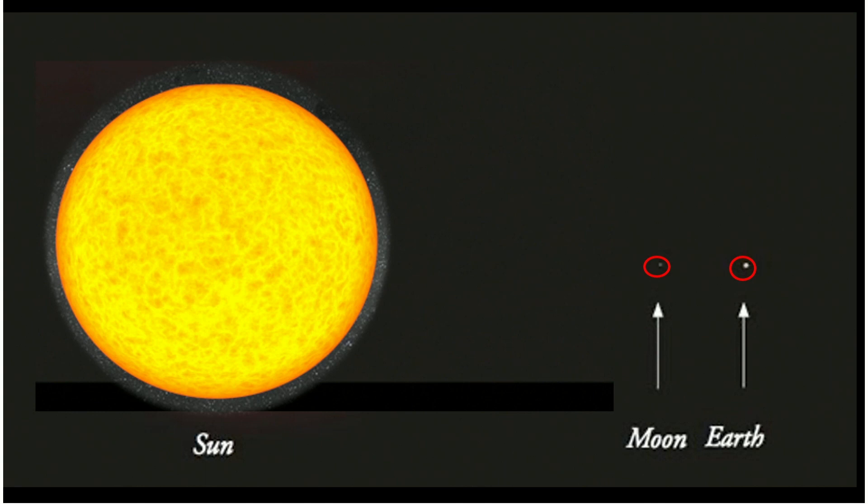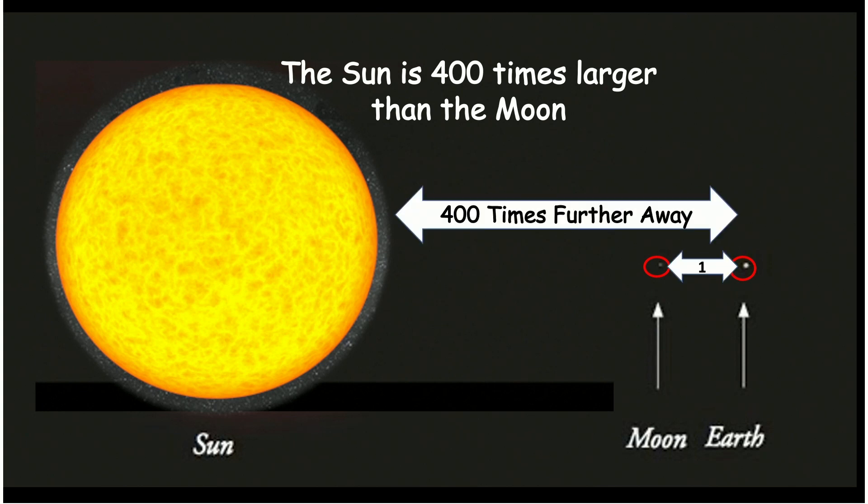Well, guess what? The sun is exactly 400 times larger than the moon. It is exactly 400 times further away.